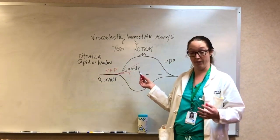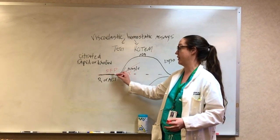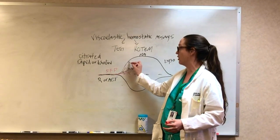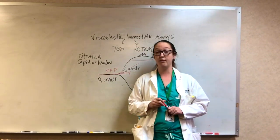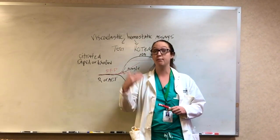Thirdly, with MA, if you have depressed MA, so they have a normal time of clot formation and angle, but they have a lower maximal amplitude or clot strength, then they have a problem with their platelets. So you give them platelets.